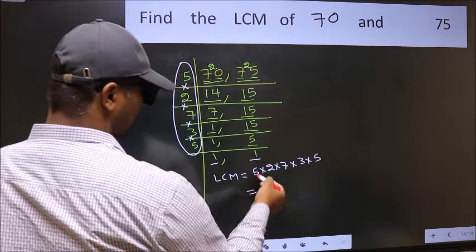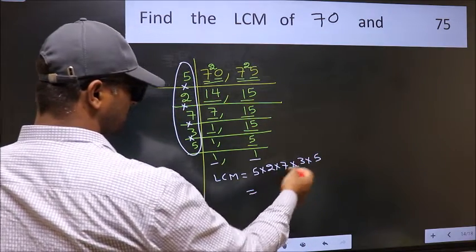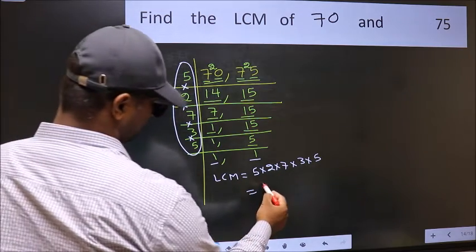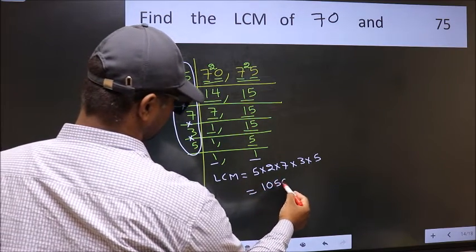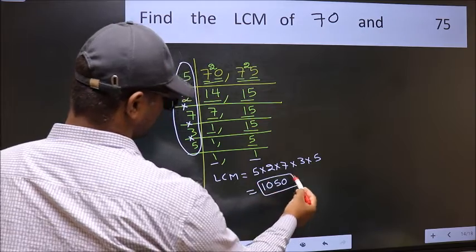When we multiply these numbers we get 1050 is our LCM.